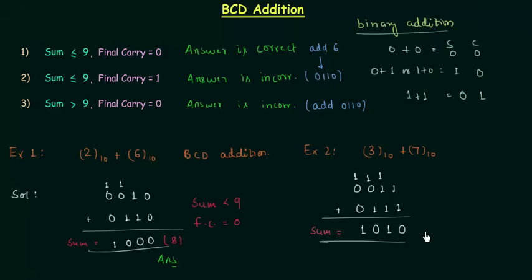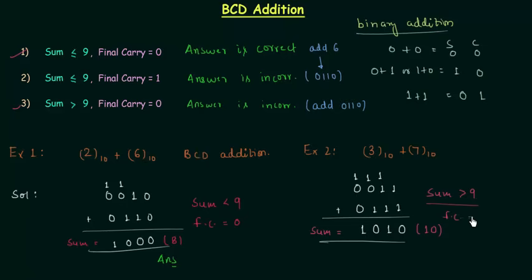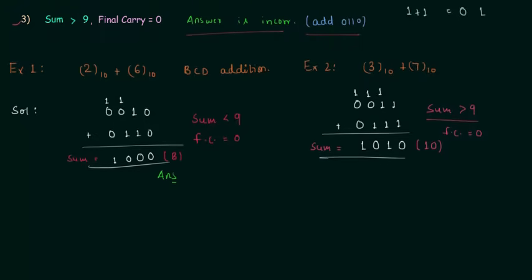1010 is 10, so sum is greater than 9. This is case number 3. In case 3, sum is greater than 9 and final carry is equal to 0. This example satisfies case 3, and for this case our answer is incorrect. Whenever the answer is incorrect we have to add 6.